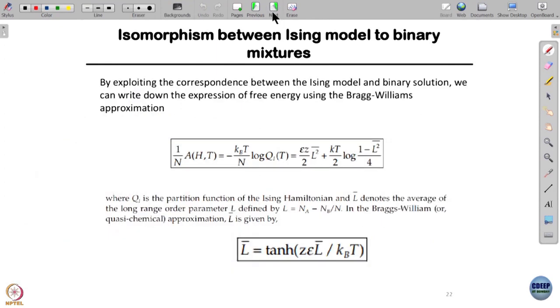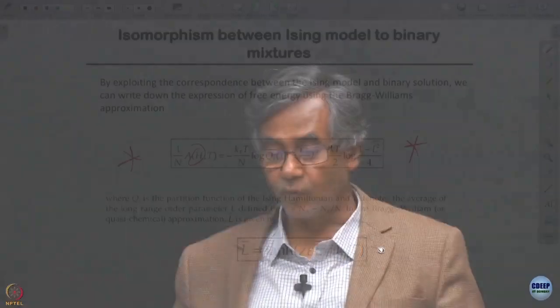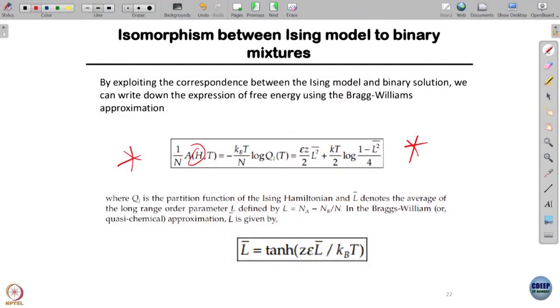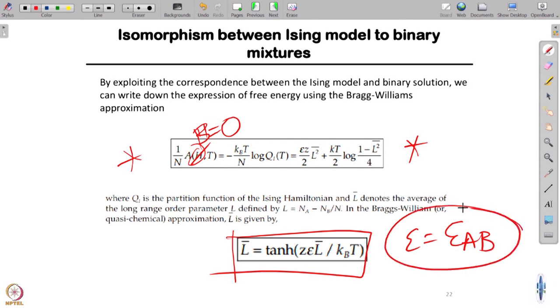As a result, we can write down the free energy. In the case of Bragg-Williams approximation, this was the free energy in the presence of magnetic field H. Here the magnetic field H equals zero. This goes over and this is the expression that we need to solve, and epsilon here is epsilon AB. We get the solution of binary mixture implicitly.